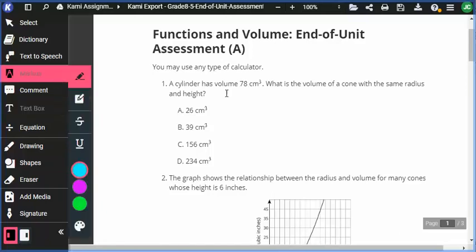The specific relationship here is that the volume of a cone and the volume of a cylinder are varied by the fraction one-third. So if you already know the volume of the cylinder and it's 78 cubic centimeters, all you need to do to find the volume of the same cone with the same dimensions is do one-third of this. One-third of 78 is 26. So the correct answer here is choice A.